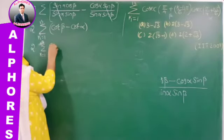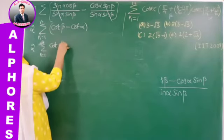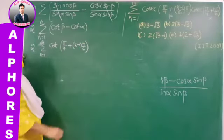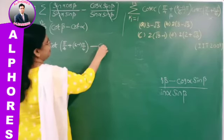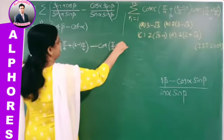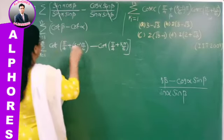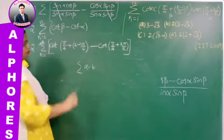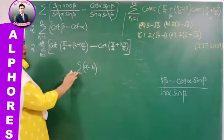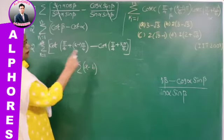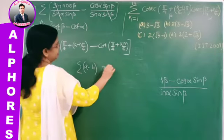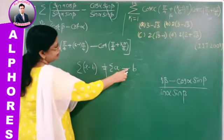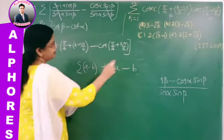This IIT 2009 problem used multiple formula types: compound angle formula for sin(alpha − beta), allied angle formula, and the method of differences. The problem integrates multiple trigonometric concepts — not confined to exactly one transformation type. That's why you must be thorough with all formula types, which comes through practice.